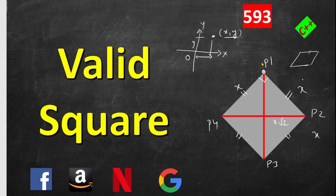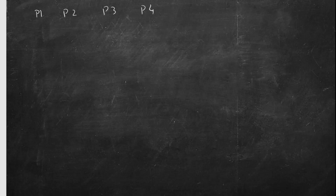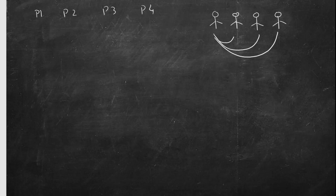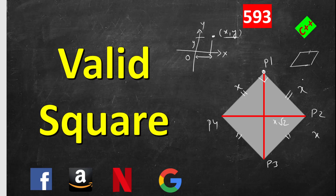So we have to check that all four sides are equal and the two diagonals are equal. If we have four points p1, p2, p3, p4, how many total connections are possible? Think of this as four people at a party where everybody shakes hands with everybody else. The first one shakes hands with the remaining three, the second one with two more, and the third with just the fourth. So total we have three plus two plus one — that is six possible line segments.